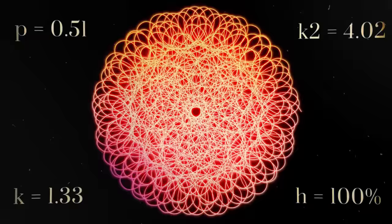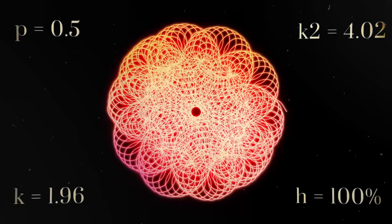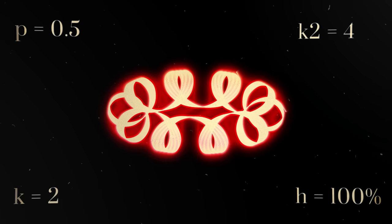Parameters k and p determine the shape of the spirals. Parameter k2 performs its shading. And the h parameter determines the thickness of the lines.